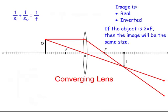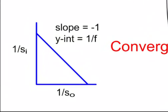We can confirm this using the thin lens equation: 1 over Si plus 1 over So equals 1 over the focal length, where Si is the image distance and So is the object distance. We also have a magnification equation: hi over ho equals negative Si over So. To find focal length graphically, plot 1/Si versus 1/So — the slope is negative 1, and the y-intercept is 1 over the focal length.